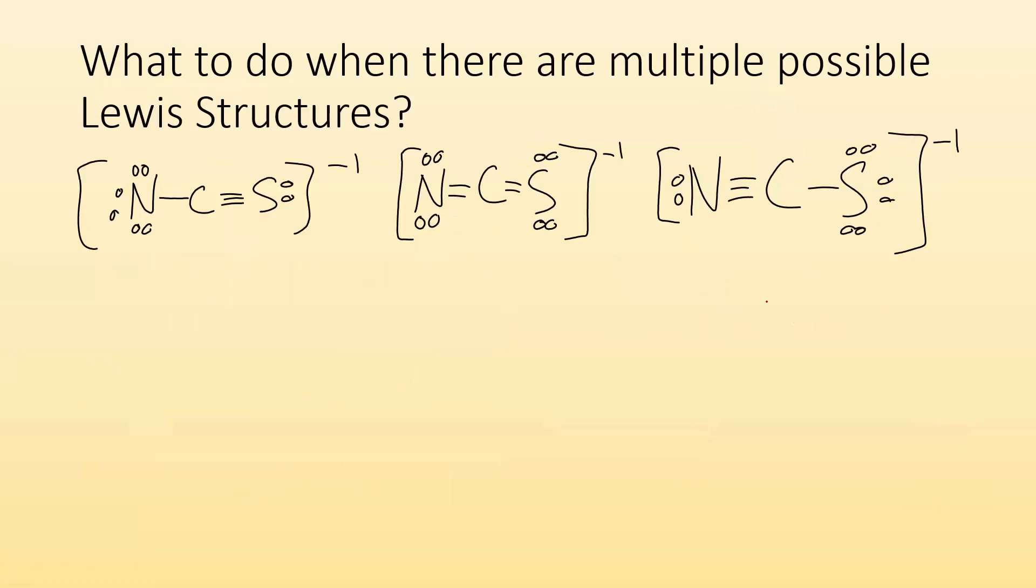So what do you do when there's multiple possible Lewis structures? So if I had NCS minus ion, I could draw it a few different ways. Which structure is the right one? Formal charge is going to answer this question and it's worth its own video. So look for that video so you know which Lewis structure is best.